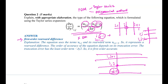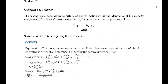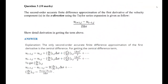For the third question: the second-order accurate finite difference approximation for the first derivative of velocity component u in the x-direction. You are required to show the detailed derivation. First, we need to identify the term — this is a second-order central difference approximation.